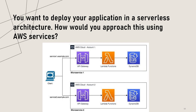You want to deploy your application in a serverless architecture. How would you approach this using AWS services? I would use AWS Lambda to execute my application code in response to events and Amazon API Gateway to expose my Lambda functions as a RESTful API. I would also use Amazon S3 to store static content and Amazon DynamoDB to store application state. Additionally, I would use Amazon SNS or Amazon SQS to decouple application components and Amazon CloudWatch to monitor and troubleshoot the application.